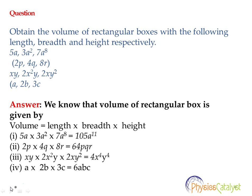The third one: xy into 2x squared y into 2xy squared. Here again, let's segregate the numeric terms. The numeric terms are 1, 2, 2, so the multiplication would be 4. The variable terms are xy, x squared y, xy squared. So if you multiply them, the answer would be x to the power 4, y to the power 4. So the final answer would be 4x to the power 4 y to the power 4.